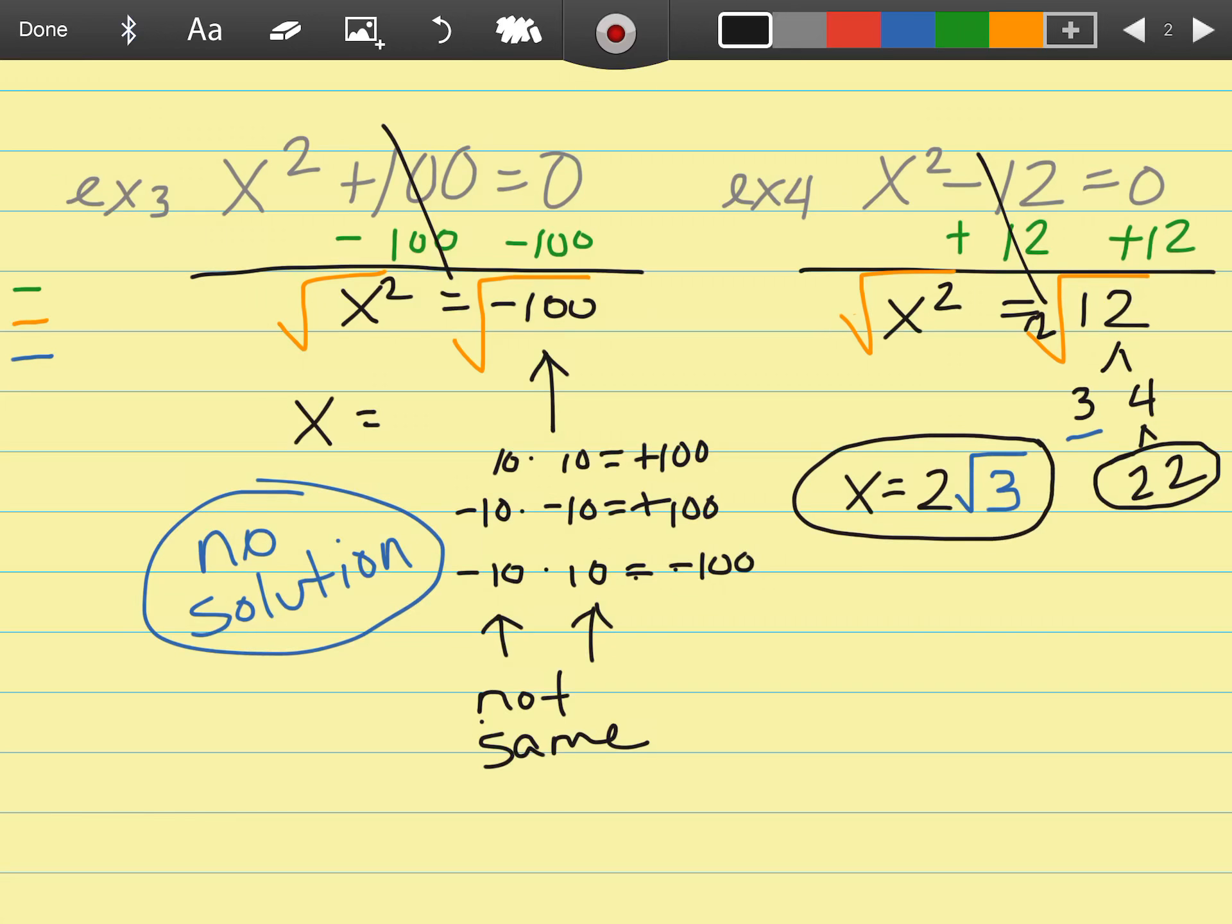That is your answer. Now in Math 1, lots of times they will give you the answer in multiple choice as a decimal form. If you type that into your calculator, you would get the irrational number 3.464101615 and it keeps going. 2 square roots of 3 is the same as 3.464. Either one would be an acceptable answer.